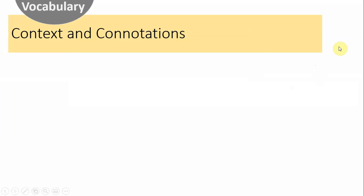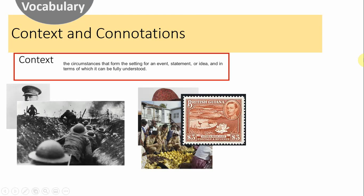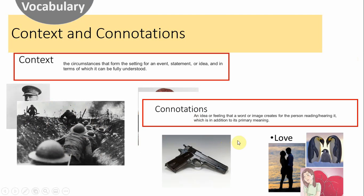Please also think about context and connotations. Context is the circumstances that form the setting for an event, statement or idea, in the terms of which it can be fully understood — such as Wilfred Owen writing about World War I, which he fought in. Connotations are the ideas or feelings that a word or image creates for the person reading or hearing it — such as 'a gun', which may connote protection, danger, power, justice, or lawlessness depending on your perspective. And 'love' may represent togetherness, heartbreak, or protection — lots of different ideas attached to one word or idea.